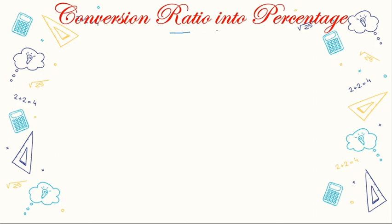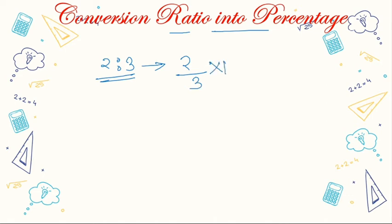Now, convert the ratio into percentage. To convert a ratio into percentage, first convert the ratio into a fraction. For example, 2:3 becomes 2/3. Then multiply by 100 to get the percentage. So for any quantity, if you want to convert it into percentage, multiply it by 100.